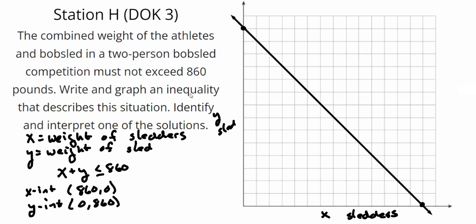So I've got my X and Y intercepts. I plot a solid line, because it's less than or equal to, and then I'm going to shade below the line. So this region here is going to be our solution region. More or less.